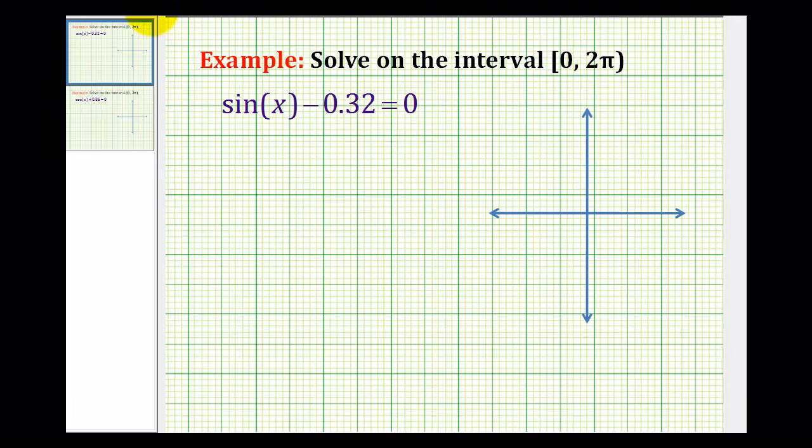So it looks like a pretty straightforward equation. Let's go ahead and add zero point three two to both sides. We'll have sine x equals zero point three two.